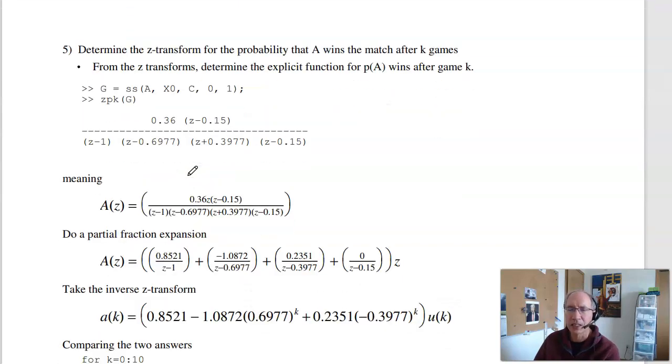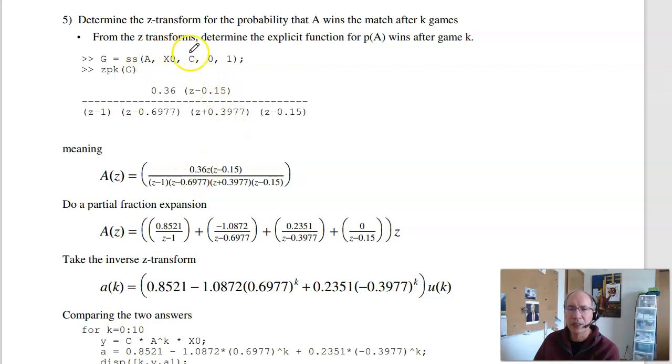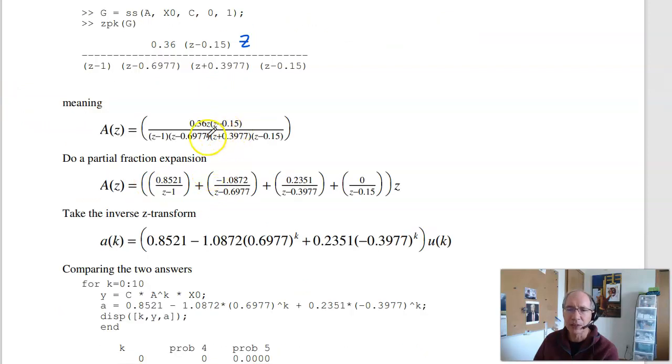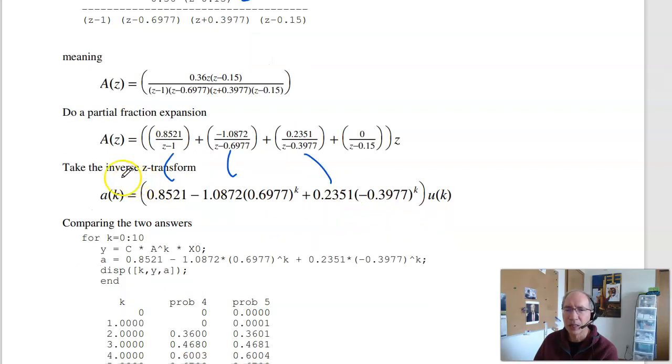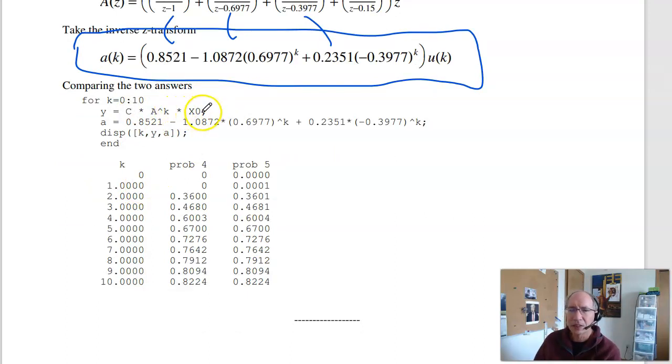There's a second way to solve. I can solve using Z transforms. Have my A matrix, X0, C. Because my D matrix is always zero. One is, I'm going to play the game every one second for one time period. Find the Z transform. Times Z, and that's going to give you A of Z. Now find the inverse Z transform. Do partial fraction expansion. And this term is zero, so just ignore it. That's the probability that A wins after K games. If I repeat, this is matrix multiplication, problem four. This is the equation that I had right here. Notice the answers are the same. Maybe a little bit of rounding, because I took this to four decimal places. Same answer. So either way works.